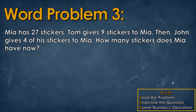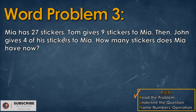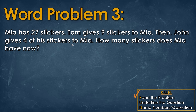Moving on to the last question, we're going to do the RUN method again. We're going to read the problem out loud. Mia has 27 stickers. Tom gives 9 stickers to Mia. Then John gives 4 of his stickers to Mia. How many stickers does Mia have now?